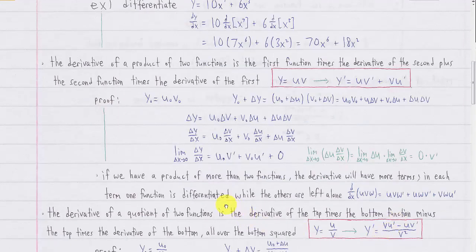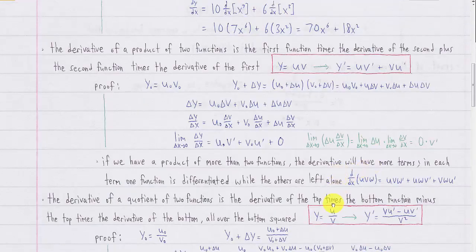For a quotient of two functions, the rule is a little more complicated. If we have y equals u over v, where u and v are functions of x, then the derivative is: on the numerator, you leave the bottom, take the derivative of the top, minus leave the top, take the derivative of the bottom, all over the bottom squared.